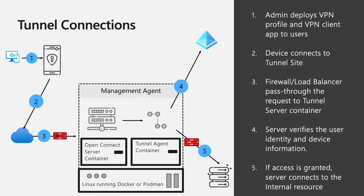From a connection perspective — what happens once this is up and running, and how does the client connect? The admin in the console is going to deploy a VPN profile and the VPN client to the users. Once they've got that, the device will use the client and the site config to connect to the configured endpoint. From there, the load balancer will pass the client request through to the tunnel server, and then the server is going to validate the user's identity and device information. That's where zero trust and conditional access kick in.